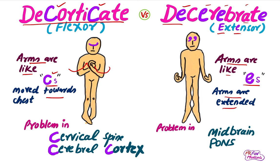To summarize: in decorticate rigidity, the arms are in the shape of a C; in decerebrate rigidity, the arms are in the position of an E. In decorticate rigidity, the problem is in the cervical spine — the word 'cervical' also contains C — or in the cerebral cortex, which also contains the letter C.